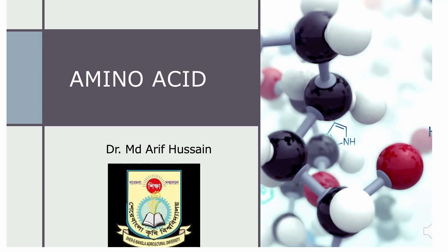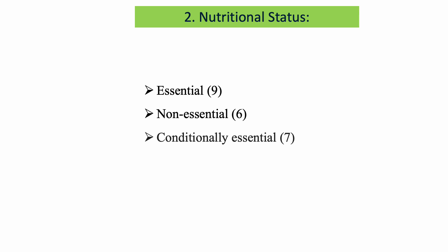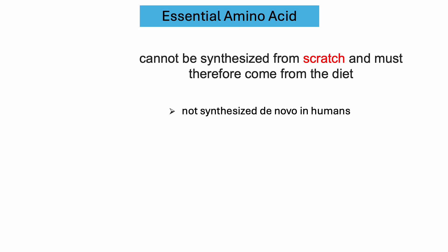Welcome to today's lecture, the second part on amino acids. Today I will discuss the classification of amino acids based on nutritional status. On the basis of nutritional status, we can classify amino acids into three groups: essential, non-essential, and conditionally essential. In this lecture, I will discuss details about the essential amino acids.